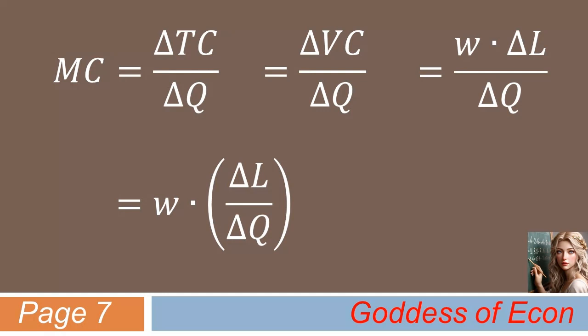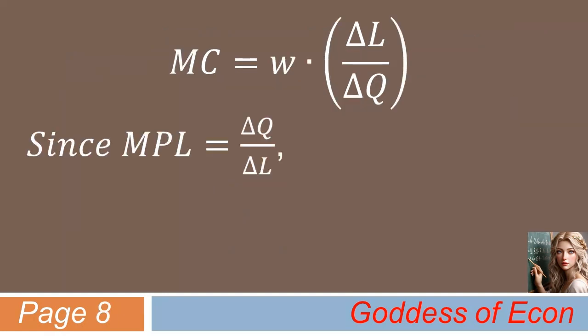Doesn't the fraction in the parenthesis look familiar to you? Don't you think it somewhat resembles the definition of marginal product of labor we have already covered? Since marginal product of labor is delta Q over delta L, we know that this is simply a reciprocal of what's in the parenthesis above. Therefore, we can rewrite the equation as marginal cost equals wage times 1 over marginal product of labor.